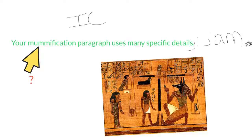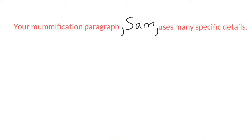I can also interrupt my independent clause and let Sam know I'm talking to him in the middle of the sentence. I could write: 'Your mummification paragraph...' — then insert the direct address. If I put it in the middle, I need to separate it on both sides with commas. The result looks like this: 'Your mummification paragraph, Sam, uses many specific details.'